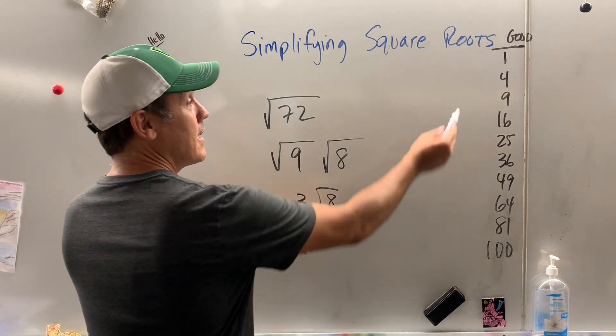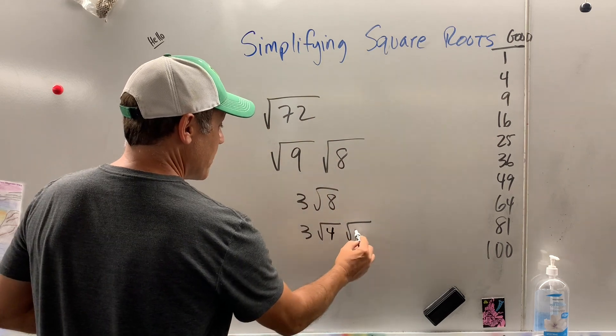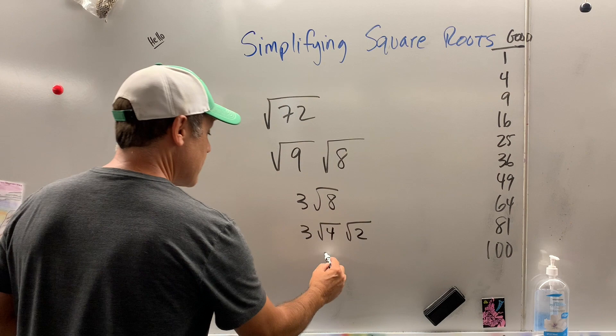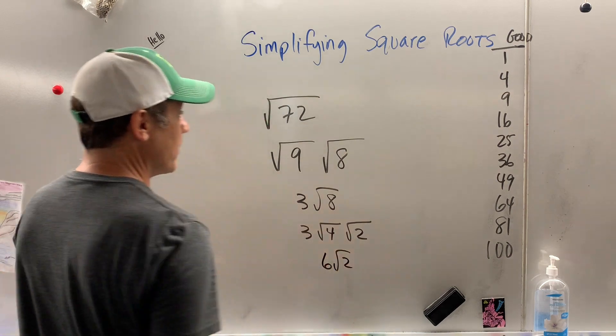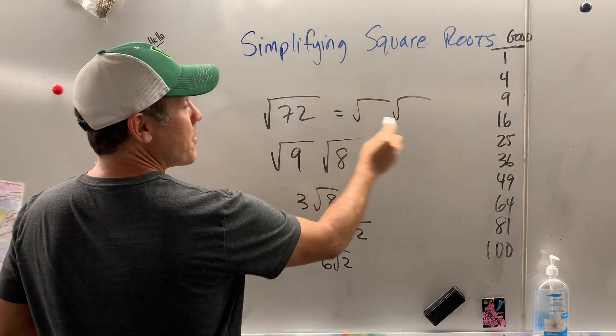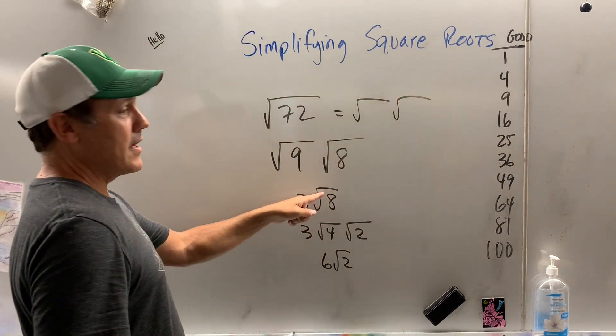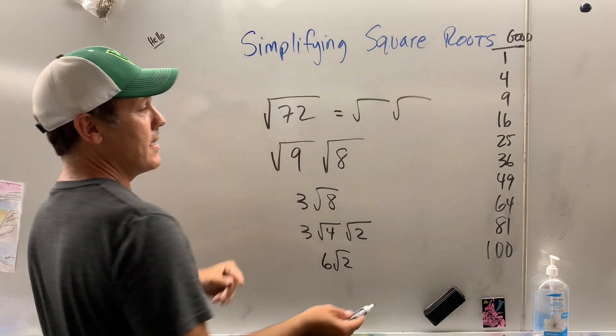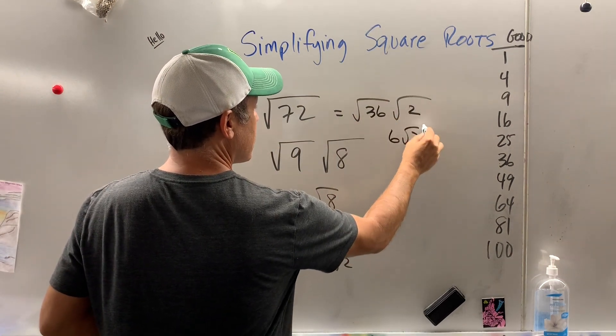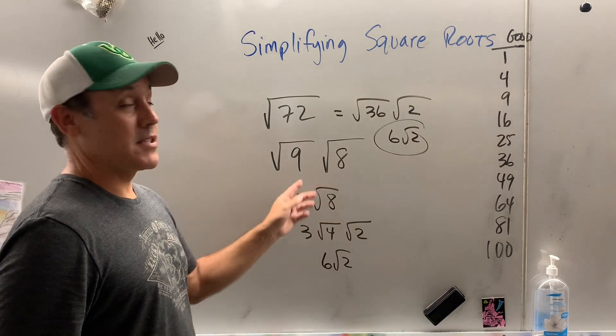What number goes into 8? 4. 4 times 2. Now, what's the square root of 4? 2. 2 times 3 is 6. 6 radical 2. Now, you could have done it this way, the good and the bad. 36. See, when you got to here, that told me a bigger number went in. So you could have put 36 times 2 and gone straight to 6 radical 2. Okay, but it's not the end of the world.